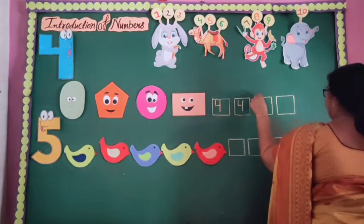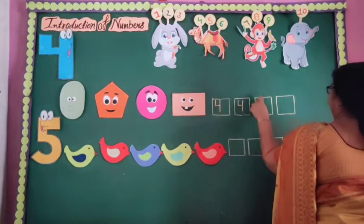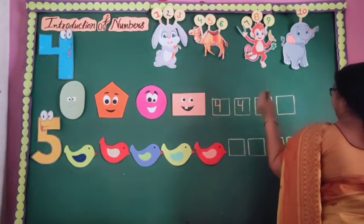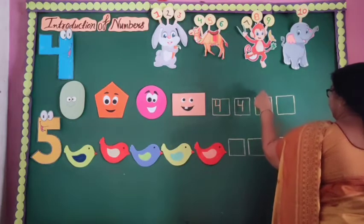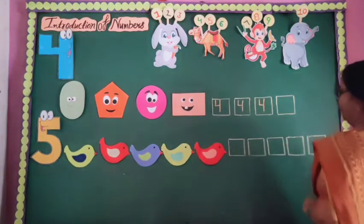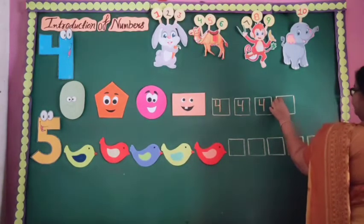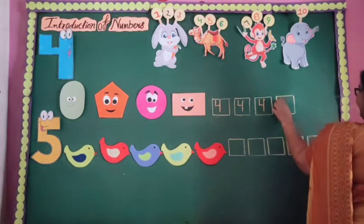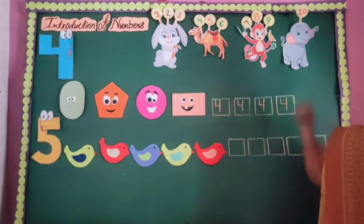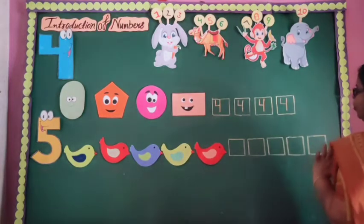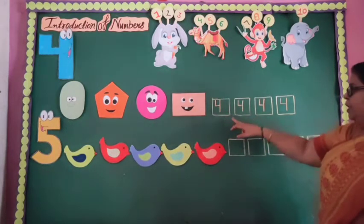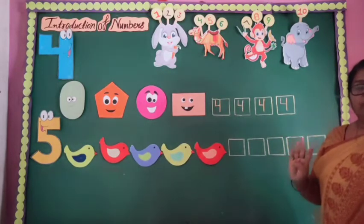Right, again: small standing line, after that a small slanting line, and one standing line. Like this. 4. How many times did I write here? Let's count: 1, 2, 3, 4. I wrote number 4 here 4 times.